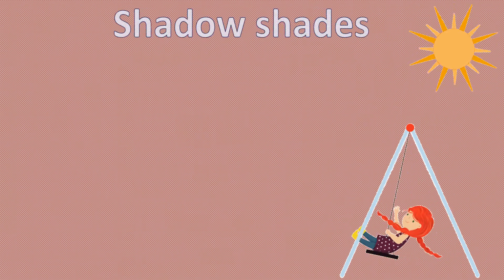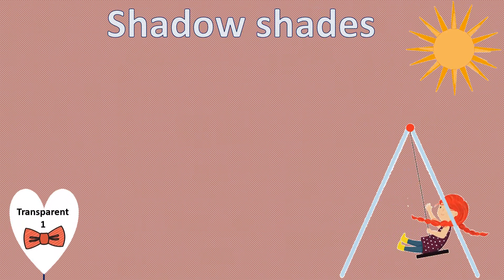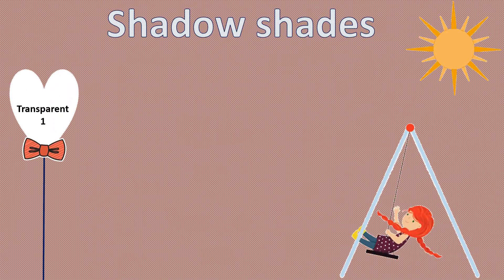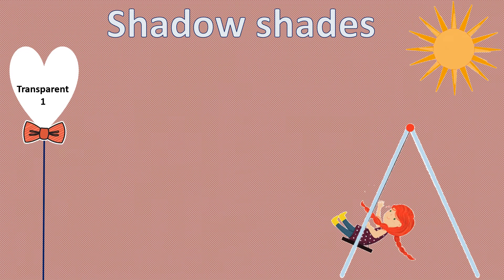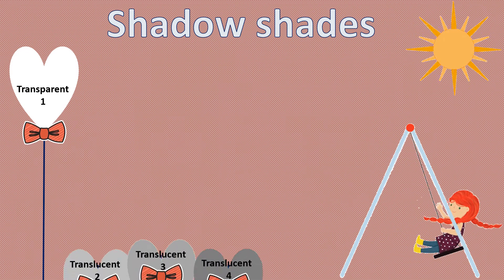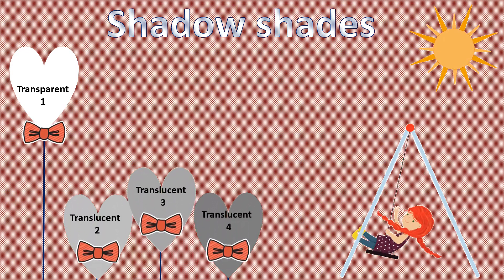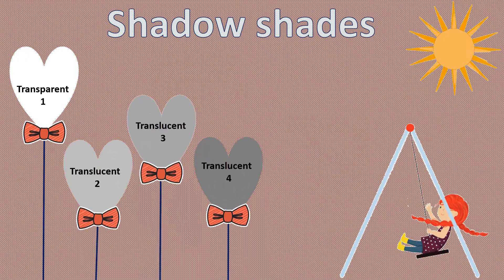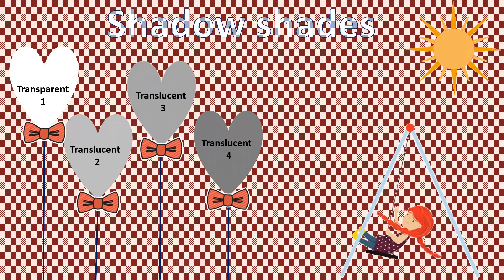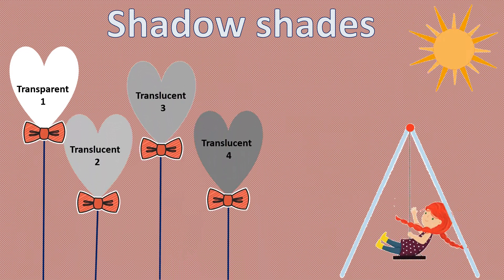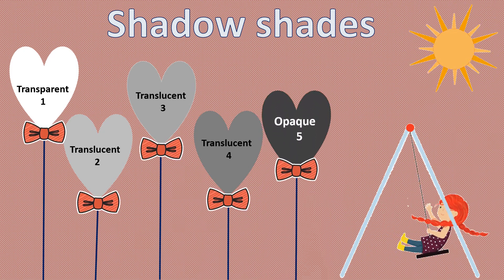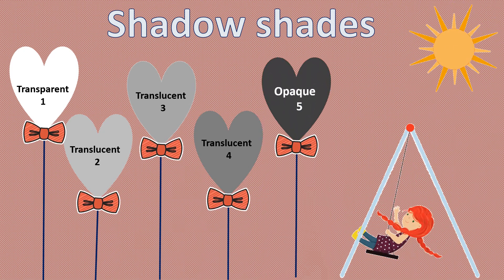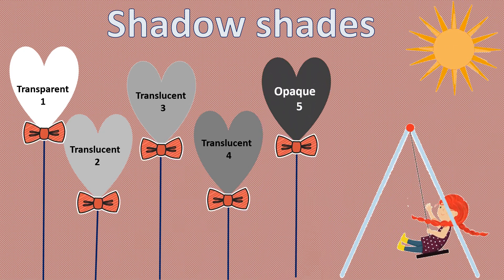As you see, transparent materials give shade 1 or no shadow. Translucent materials give partial shadows with shade 2, 3, or 4. Finally, opaque materials give shade 5 or total shadow.